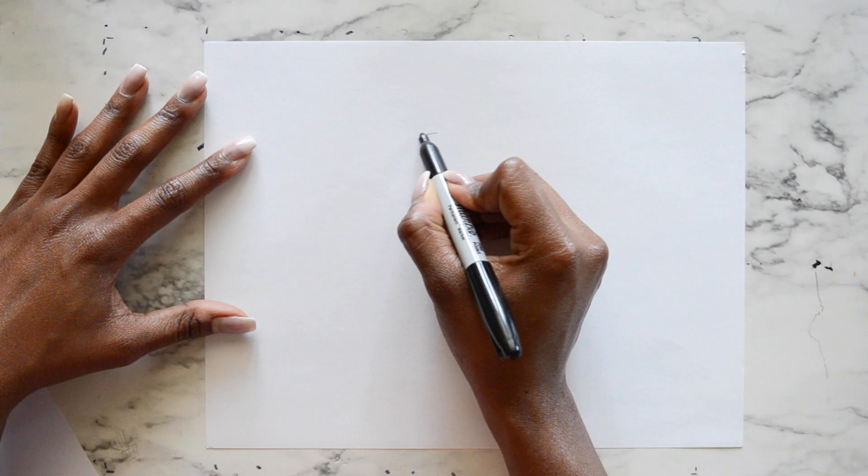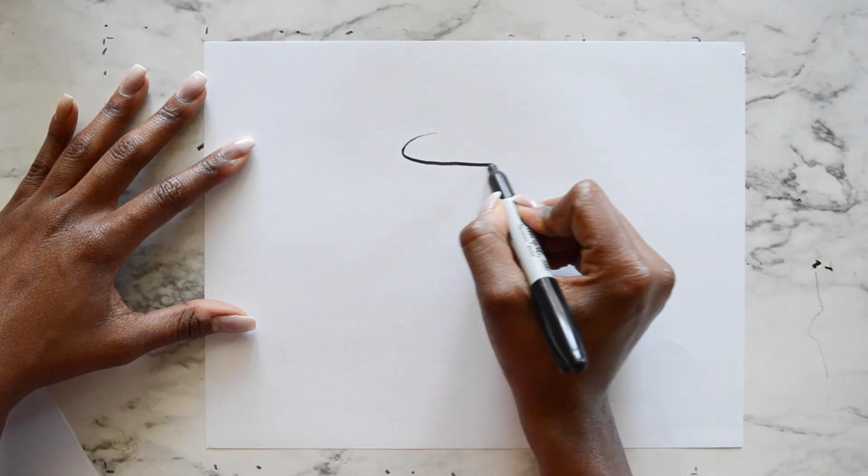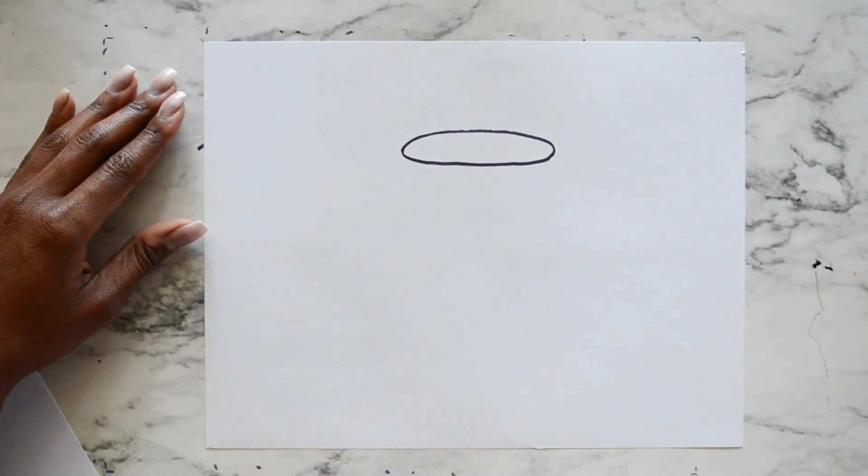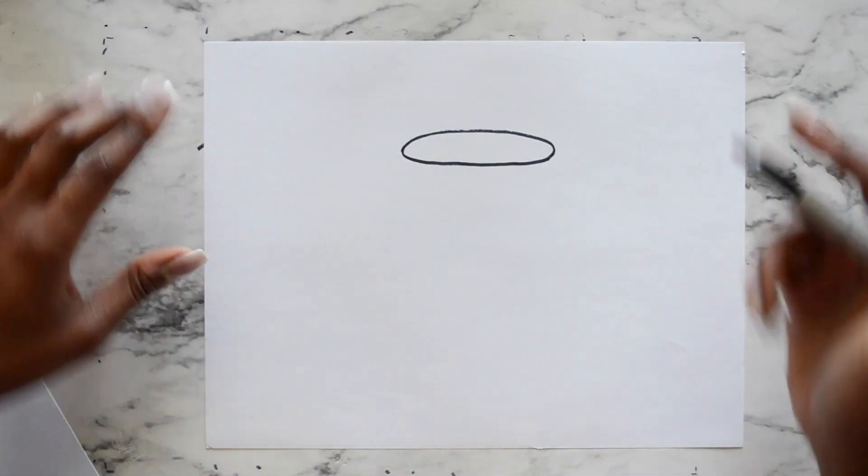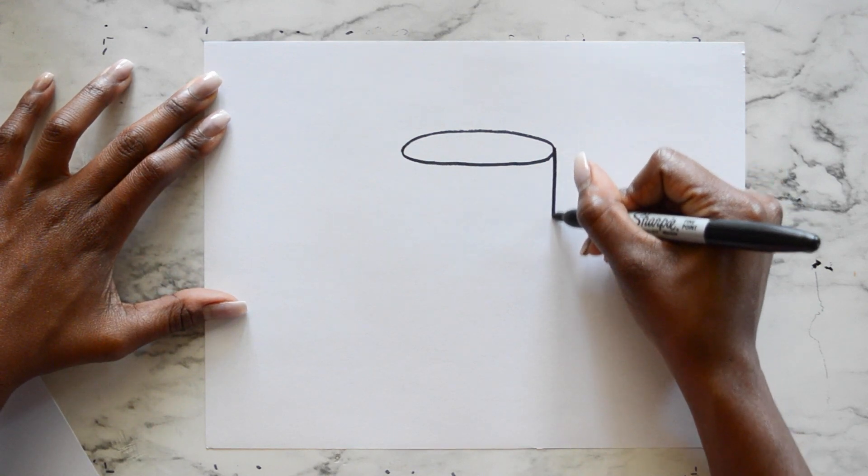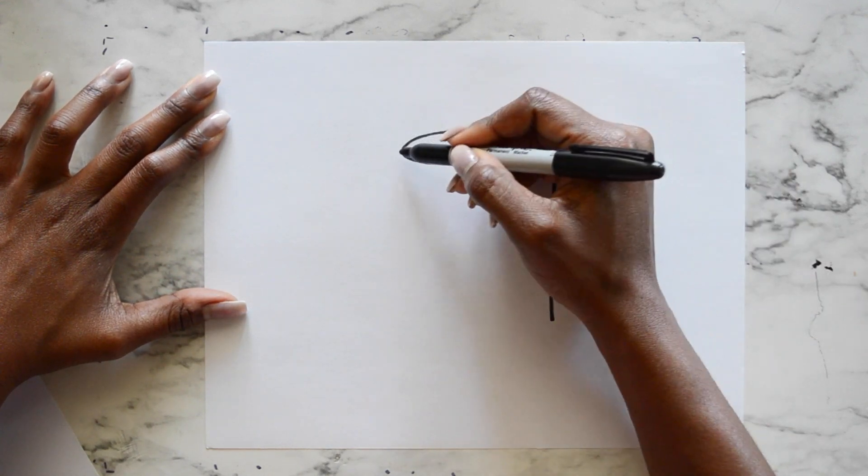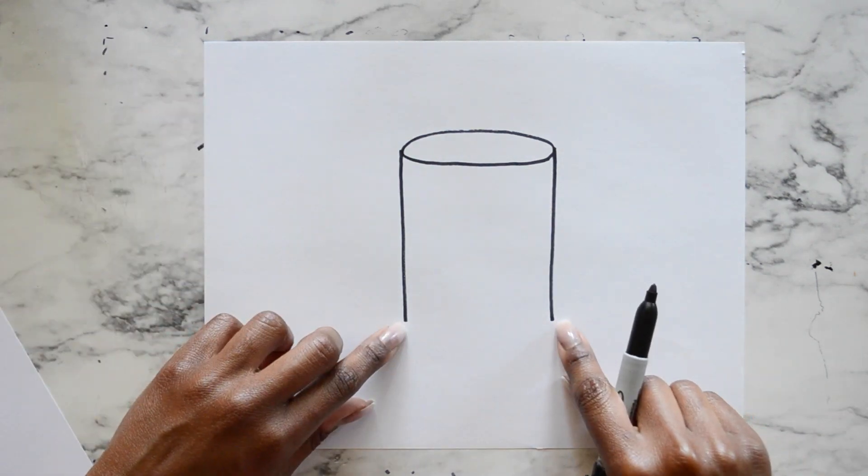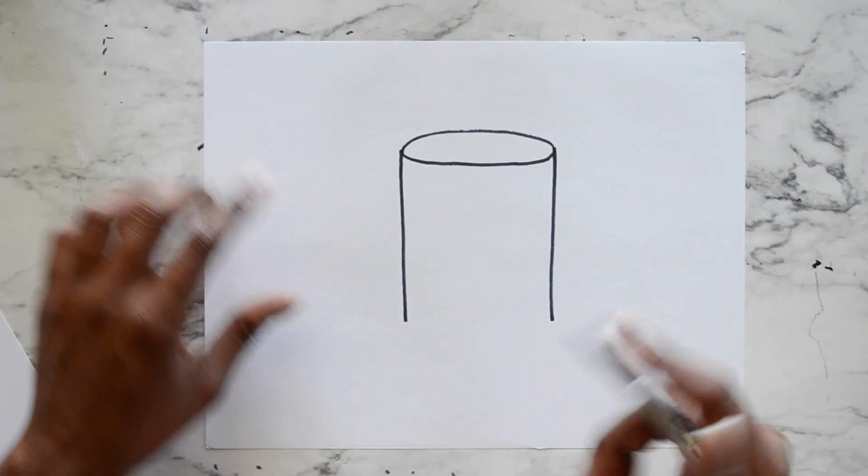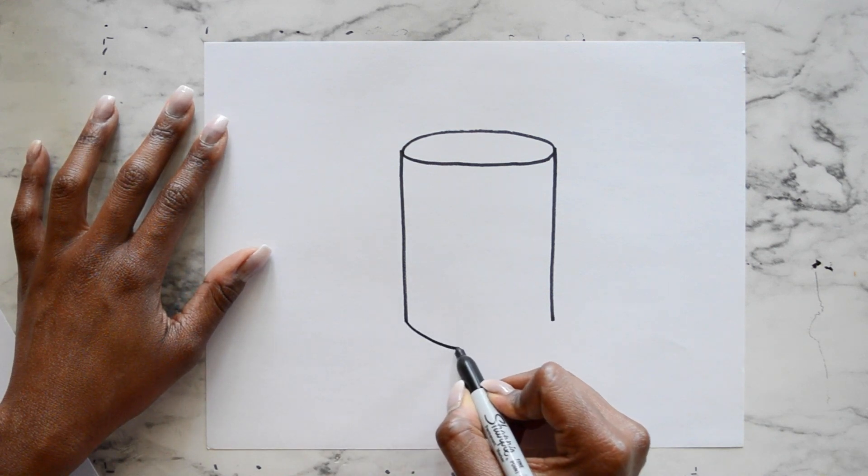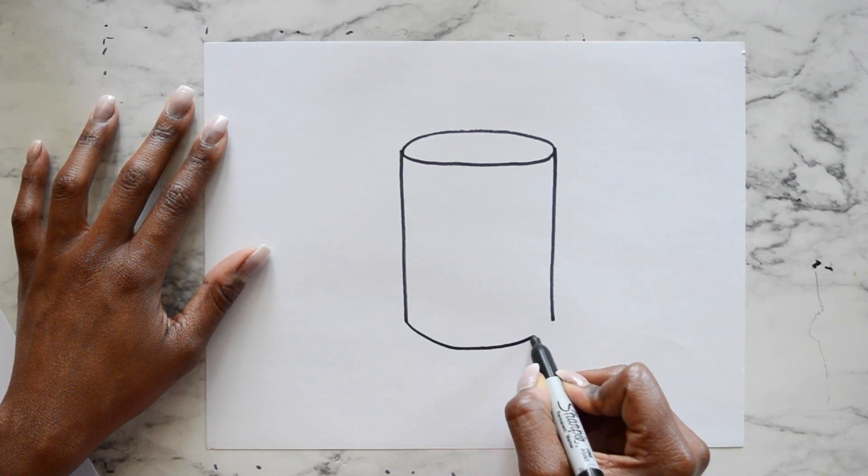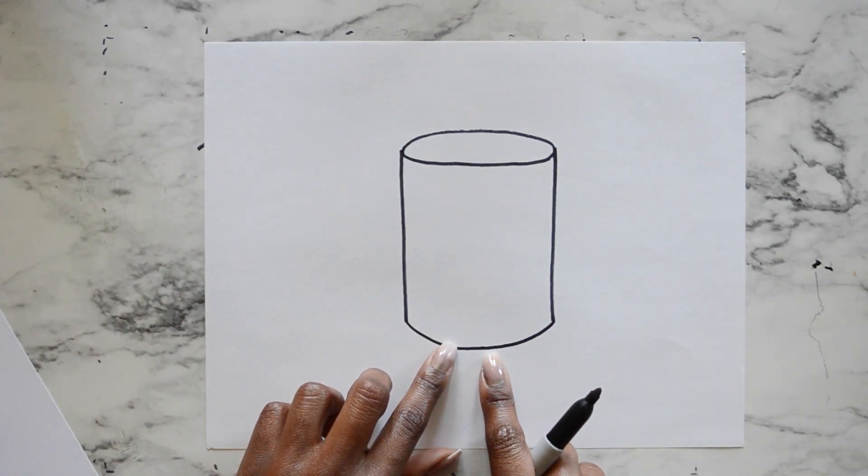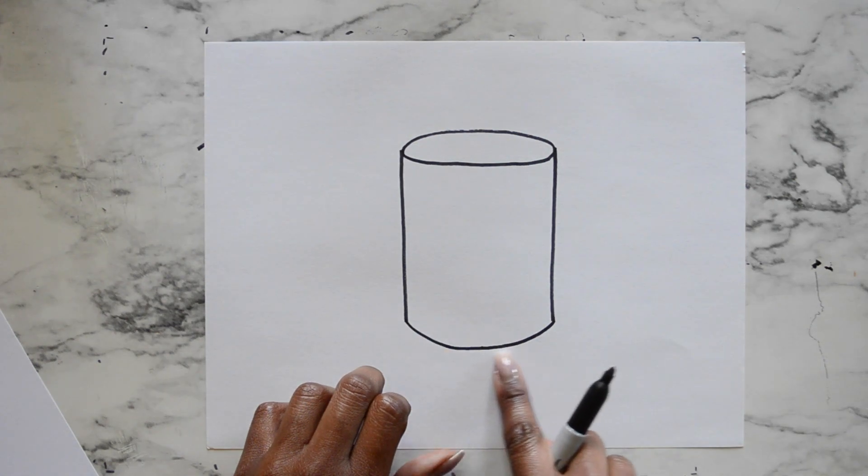To draw a cylinder, we're going to start with a 2D shape of an oval. Now we will draw two vertical lines on each side of the oval. Then we'll connect these two points, or vertices, with a curved line, like a smiling line. The reason why this isn't flat is because our cylinder is still round. So anything that is round is going to have a curved line.